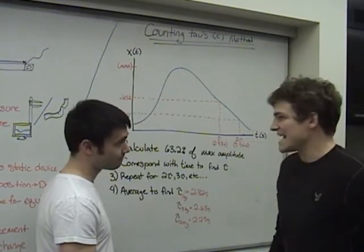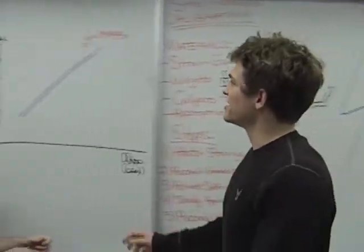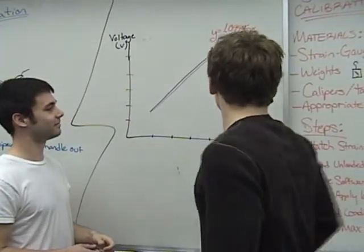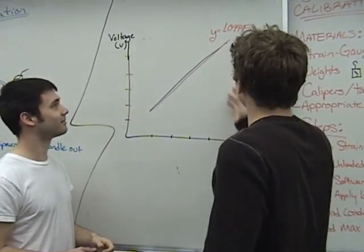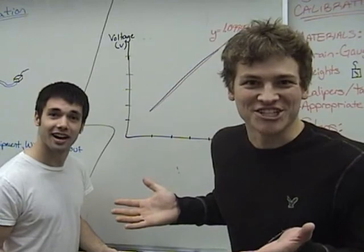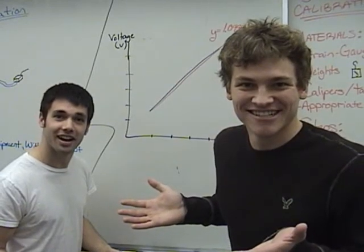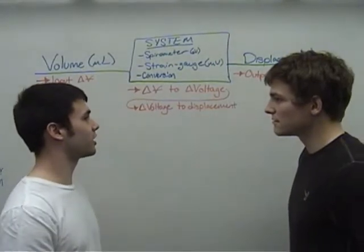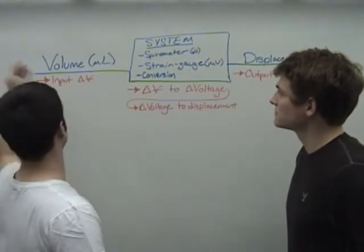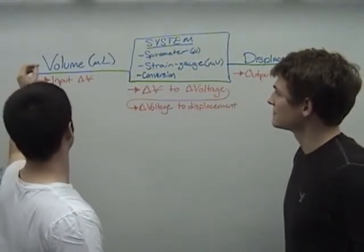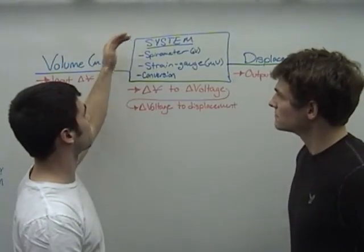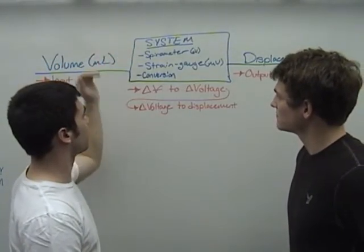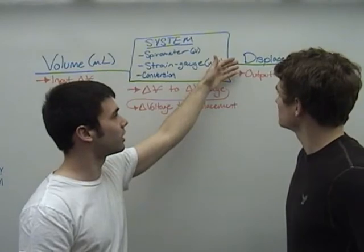That's great. And now we have that linear fit for voltage to displacement like we wanted, giving us our conversion factor. So using our calibration and counting tau's method, we were able to successfully take a volume input, put it through a system of a spirometer, strain gauge, and conversion factors, and get a displacement in centimeters.